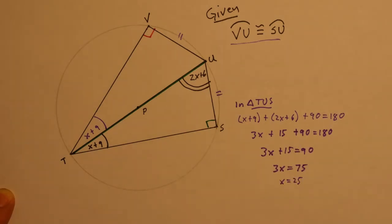Once we have a value of x, we substitute it in to find all remaining angles. Angle UTS is 34 degrees, angle TUS is 56 degrees, and angle VTU is also 34 degrees. Then looking at triangle VTU, angle VUT must also be 56 degrees.